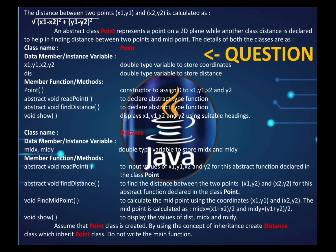I will show the base class, the derived class, and the main function, even though in ISC you are not supposed to write the main function or the base class. Now see the question: an abstract class Point represents a point on a 2D plane, and another class Distance is declared to find the distance between two points and the midpoint.